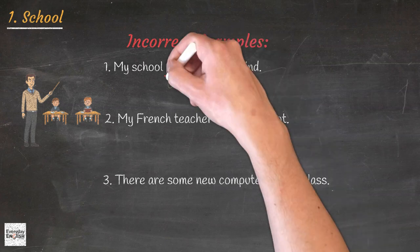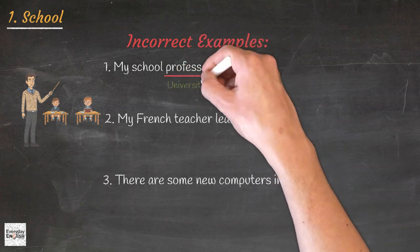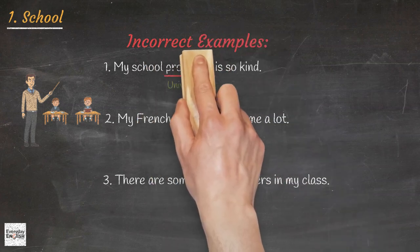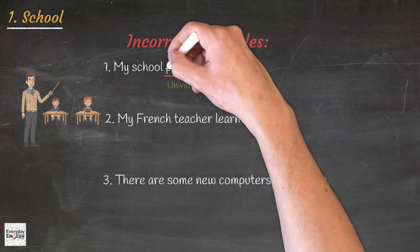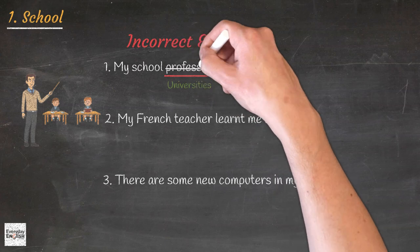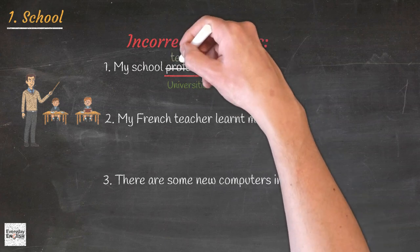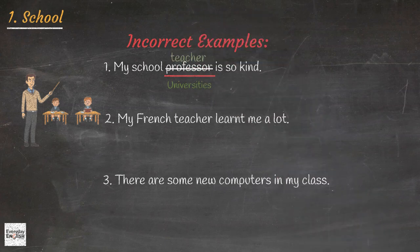Professor: Professors are often employed by universities, but teachers work for schools. Therefore, the accurate term should be 'teacher.' For example: My school teacher is so kind.